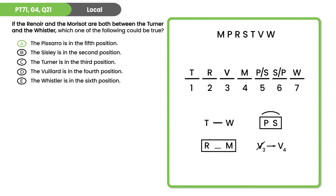Looking at the other choices: S going second — we have R going second in our hypothetical, so that doesn't look possible. T going third — we have V going third. V going fourth — we have V going third. W in sixth — we have it in seventh. While we didn't absolutely prove B through E are wrong, because we already found a hypothetical that worked for answer choice A, that was enough to pick it.